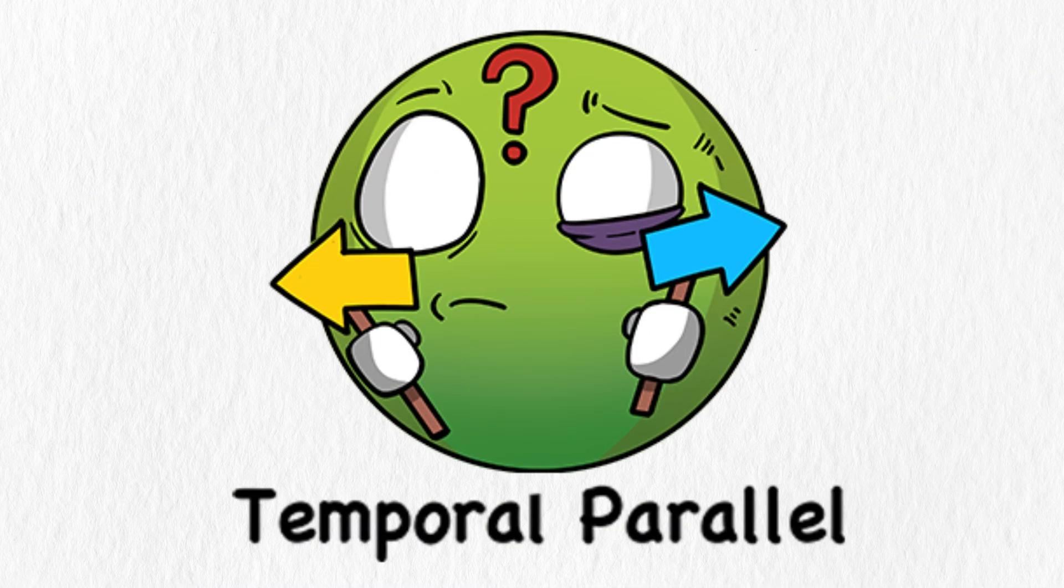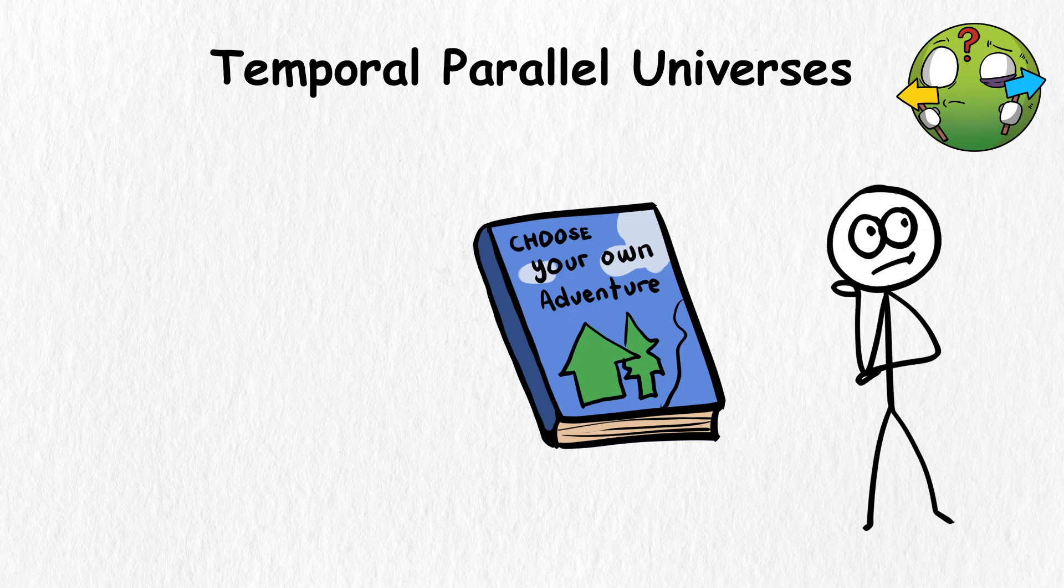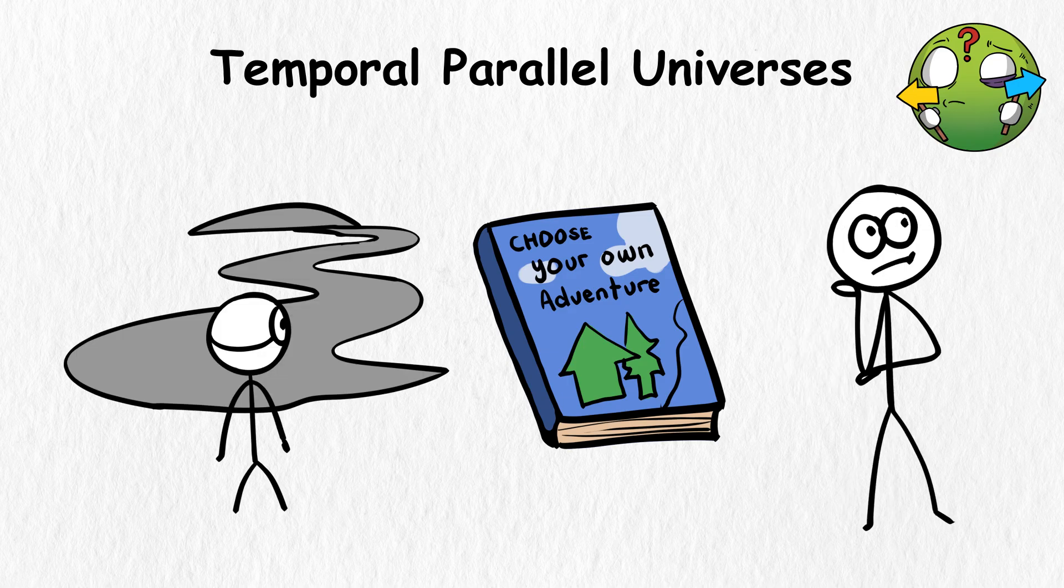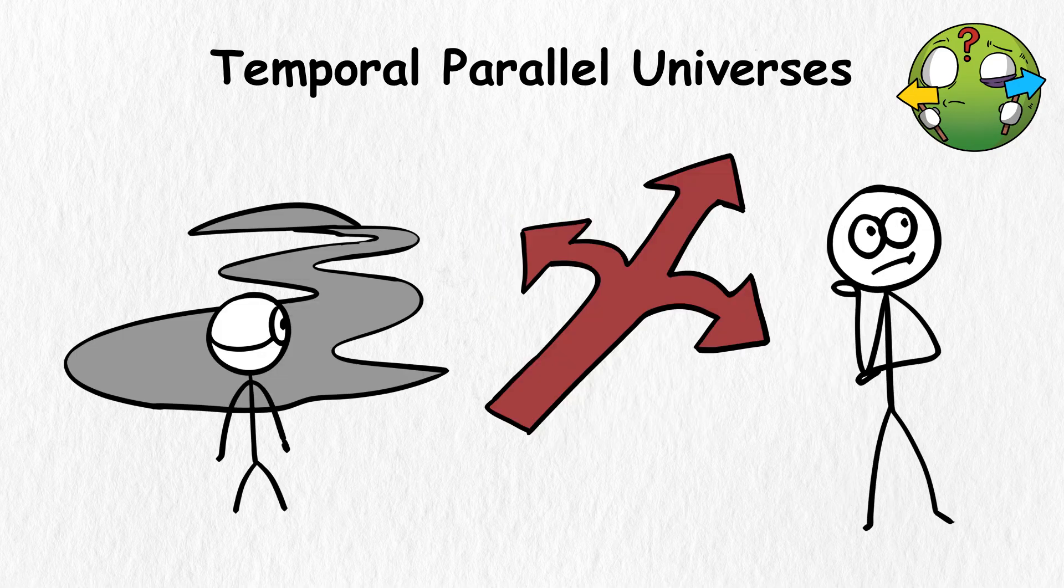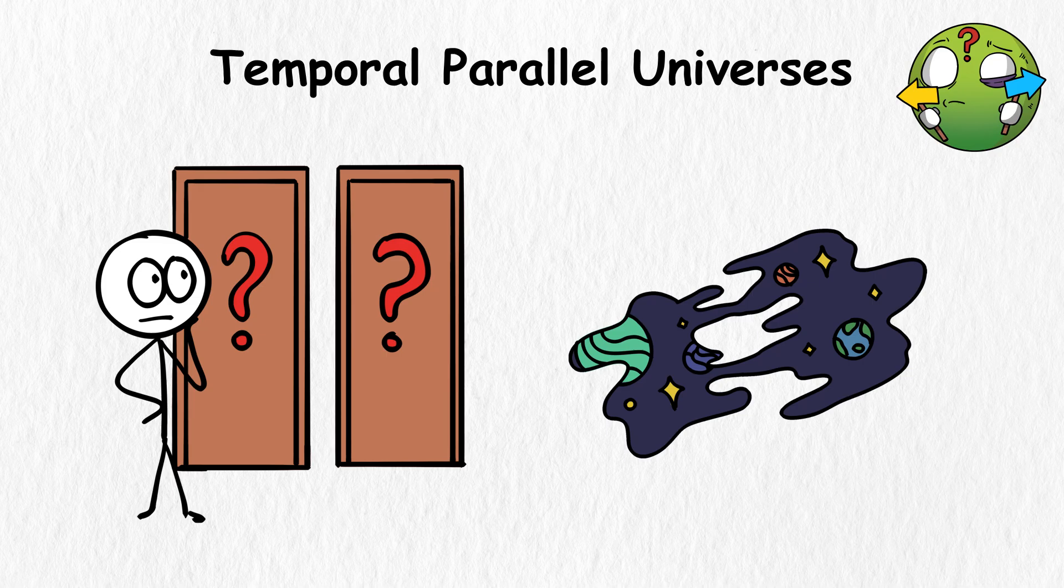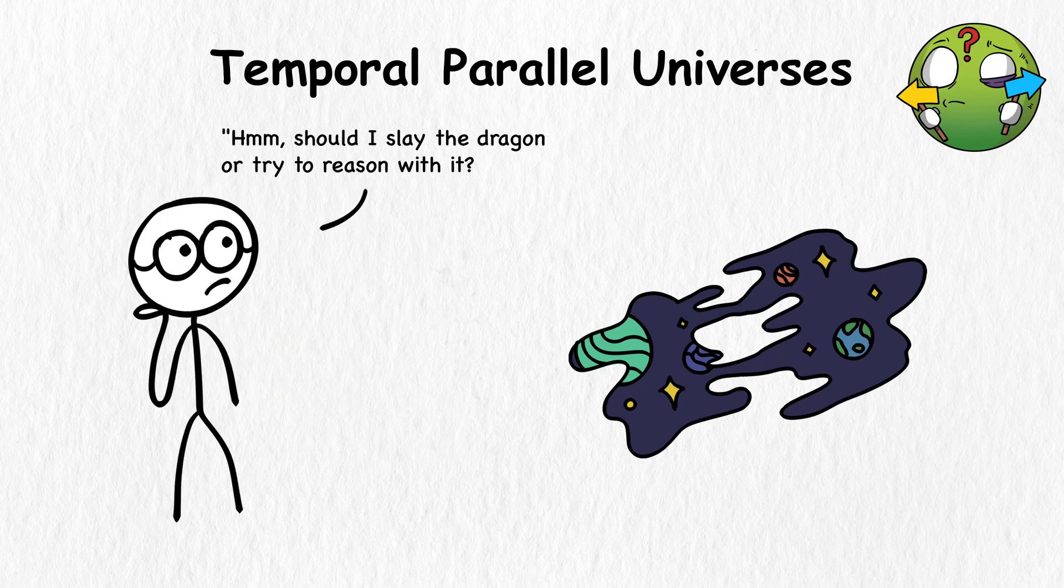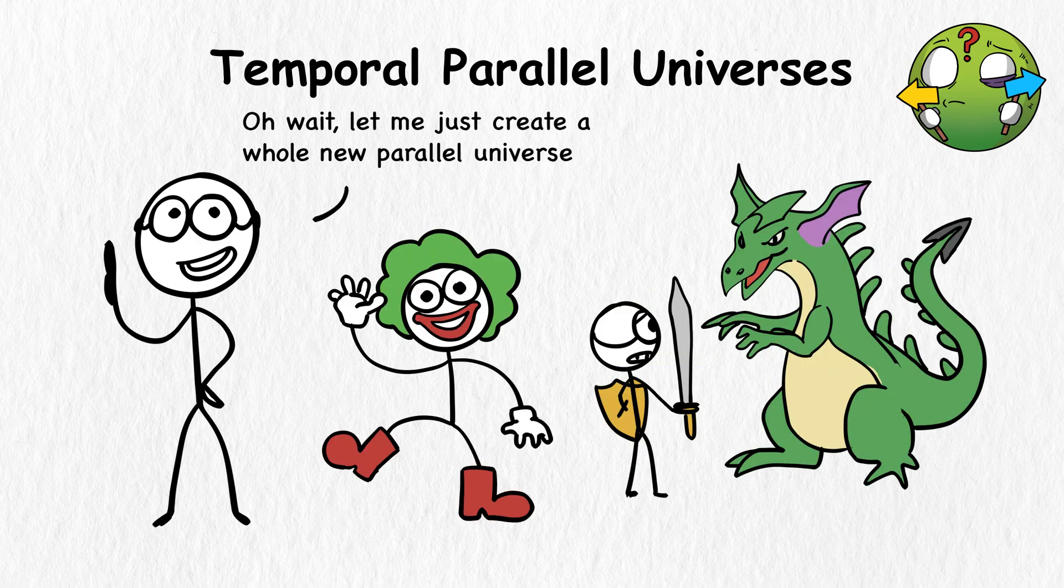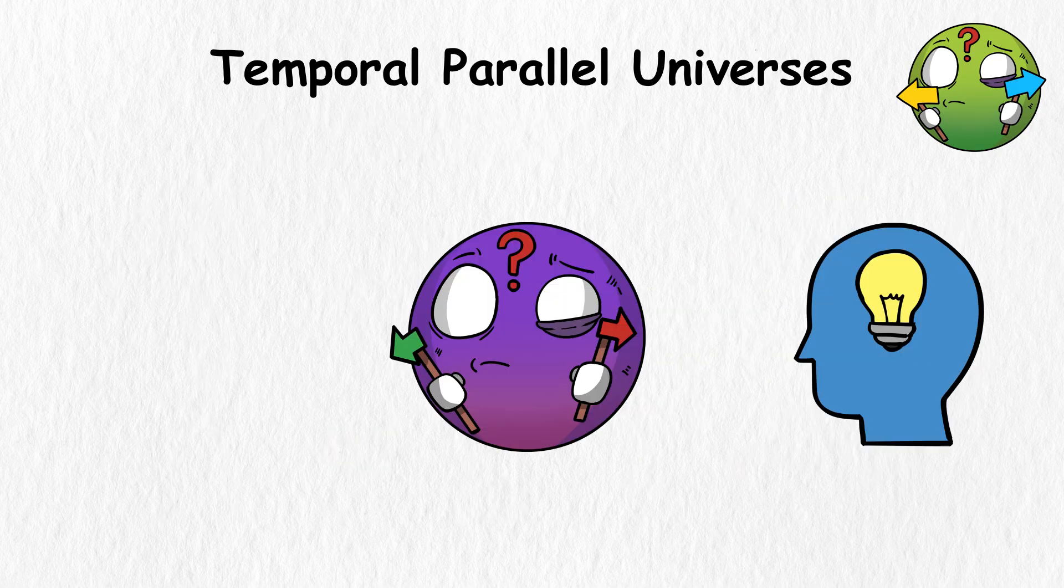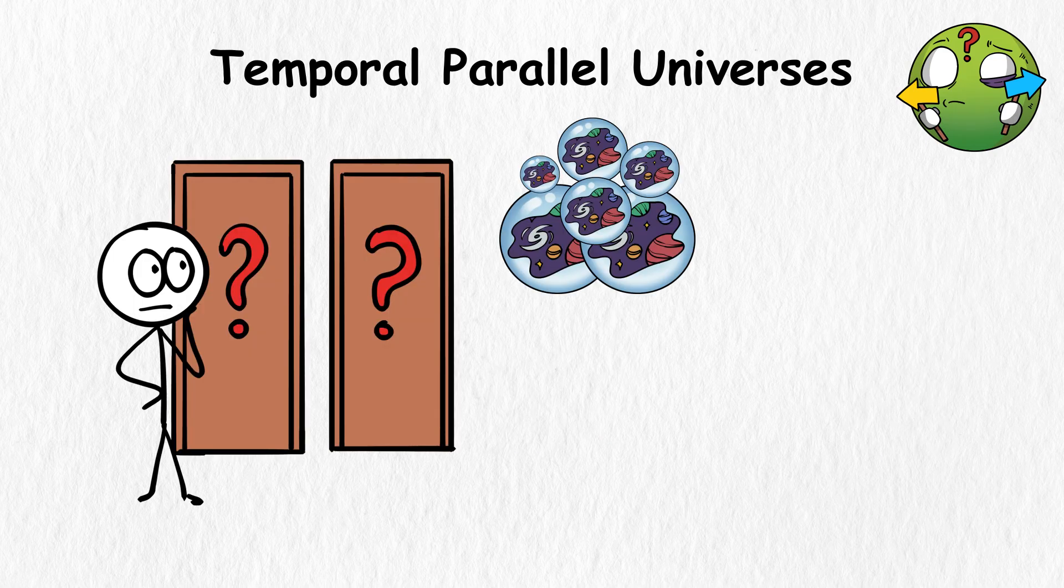Temporal Parallel Universes. Maybe you've read one of those choose-your-own-adventure books before. These books allow you to make choices that send you down a new path. Every path is different, depending on the choices you make. Every time you reach a decision point, you're not just picking a page to turn to, instead you're splitting the universe in two. It's like, should I slay the dragon or try to reason with it? Oh wait, let me just create a whole new parallel universe where I'm a clown instead of a dragon slayer. The theory of Temporal Parallel Universes works a lot like that. This theory says that every decision you make creates a new universe.